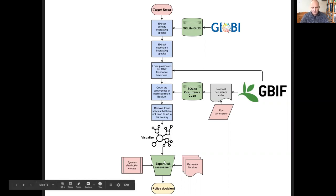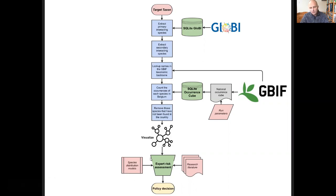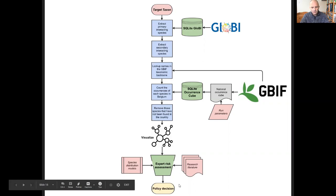This is then given to experts who can evaluate how those interactions might impact native biodiversity, and it can trigger further research. All of this is used to support policy decisions in the end.